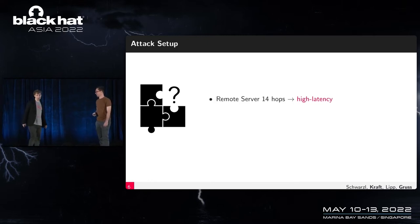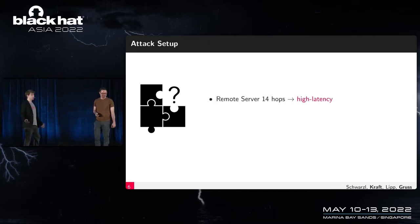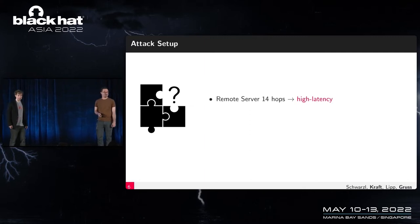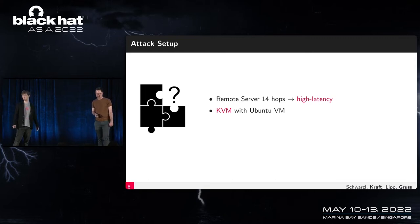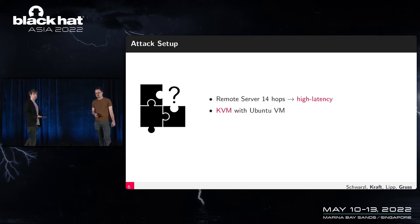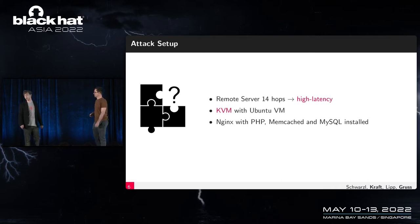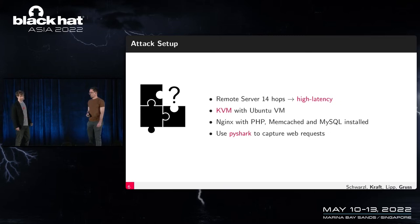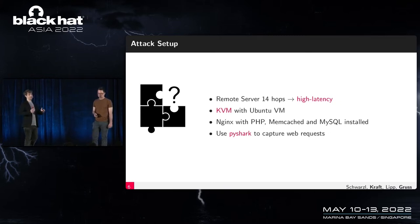We tried it out on a remote server over 14 hops across the internet with very high latency. We targeted a KVM setup running Ubuntu with an off-the-shelf nginx with PHP, memcached, and MySQL installed. We used Wireshark to capture the web requests. 14 hops across the internet will have latency variation in the range of milliseconds — how can that possibly work?